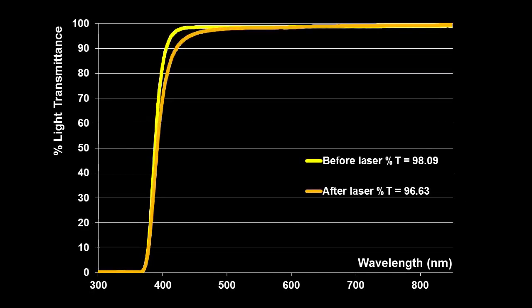In an IOL with UV absorber, the small change in light transmission mostly occurs in the blue-violet range. The UV protection of the IOL remains practically unchanged.